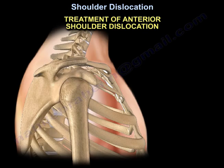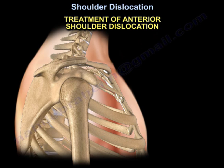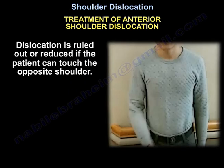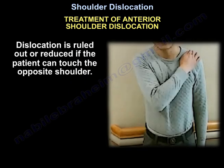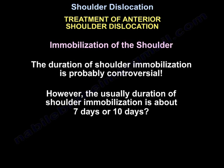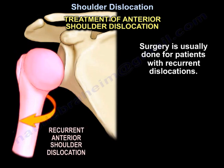Treatment of anterior shoulder dislocation involves immediate reduction. The dislocation is considered reduced if the patient can touch the opposite shoulder. The second step is immobilization of the shoulder — the duration is somewhat controversial, but the usual time is about 7 to 10 days. Surgery is usually done for patients with recurrent dislocations.